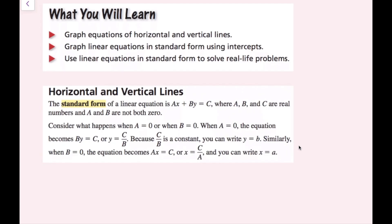Similarly, when b equals zero, the equation becomes ax equals c, and if you divide both sides by a, you get x equals c over a, and then you can write it as x equals another constant, lowercase a. So we're going to look more into horizontal and vertical lines in just a moment.